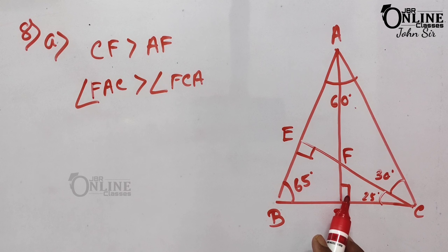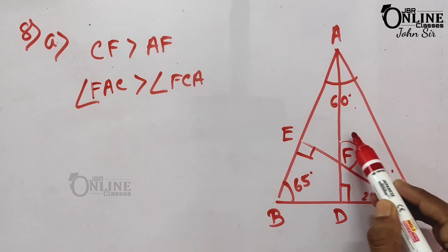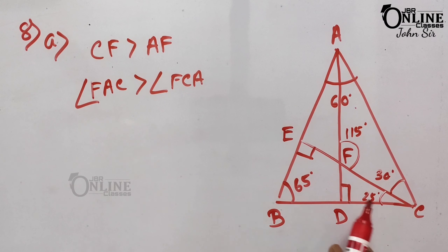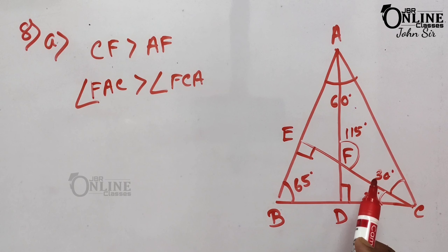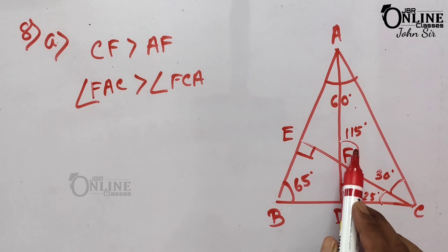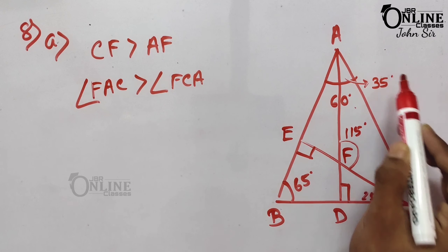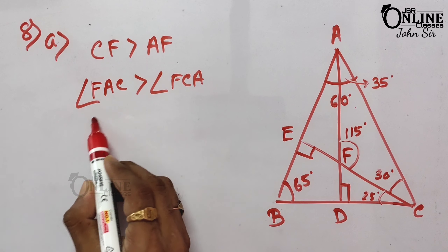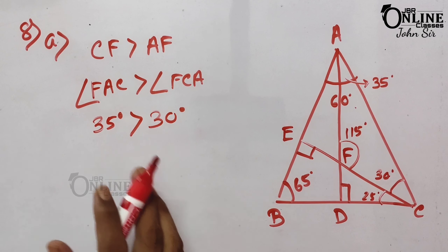Since one angle = 90° and another = 25°, the exterior angle at that vertex = 90 + 25 = 115°. Now, since this exterior angle equals 115° and one interior angle equals 30°, the remaining angle = 115 − 30 = 35°. So angle FAC = 35°.